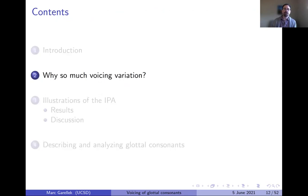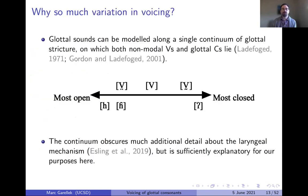Before getting to the data, I want to talk about why we see so much variation in voicing for glottal consonants. It's useful to schematize glottal consonants and non-modal vowels along a single continuum of glottal stricture or glottal opening. This is a modified version of the continuum model in Ladefoged 1971 and in Gordon and Ladefoged's classic paper on non-modal phonation across languages.